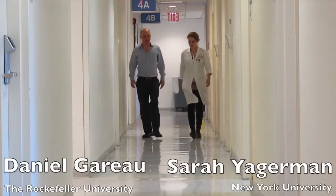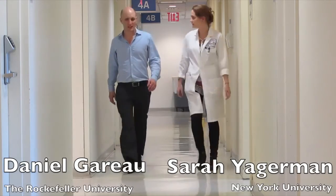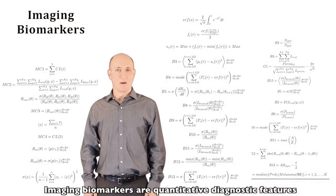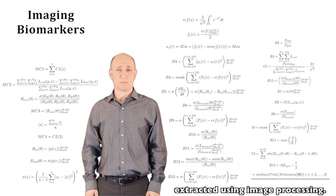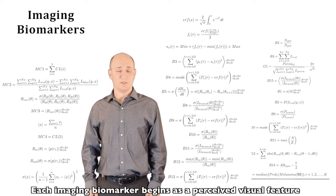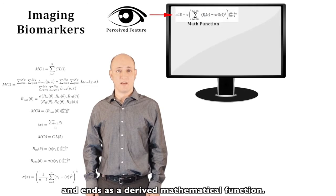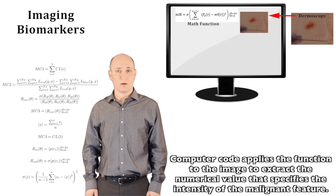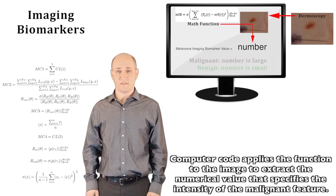Researchers in New York City are combining imaging with machine learning to improve early detection of melanoma. Imaging biomarkers are quantitative diagnostic features extracted using image processing. Each imaging biomarker begins as a perceived visual feature and ends as a derived mathematical function. Computer code applies the function to the image to extract the numerical value that specifies the intensity of the malignant feature.